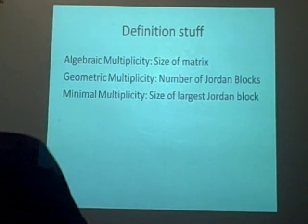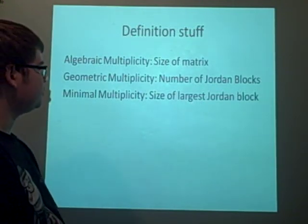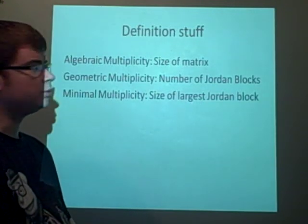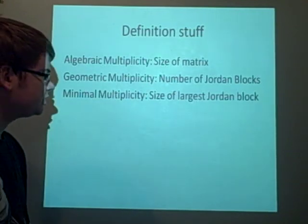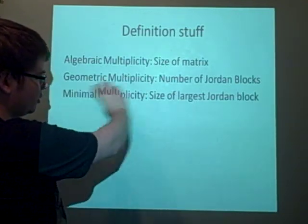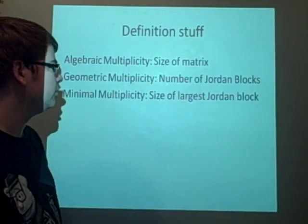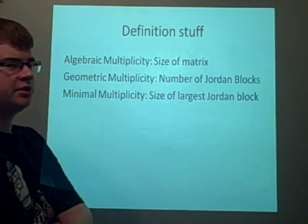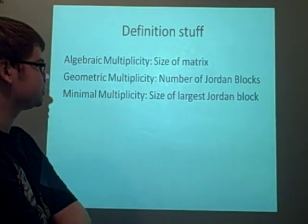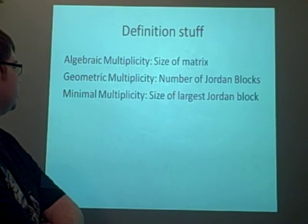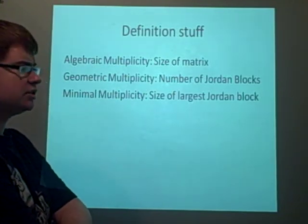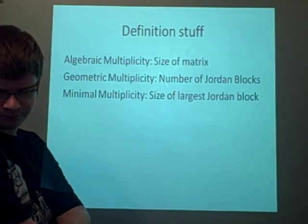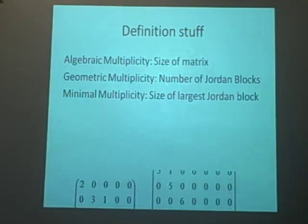Some definitions for the Jordan Normal form: the algebraic multiplicity, this is the size of the matrix, so the number of columns. The geometric multiplicity is the number of Jordan blocks. The minimal multiplicity, this is the size of the largest Jordan block. And we've got an example here to show you.